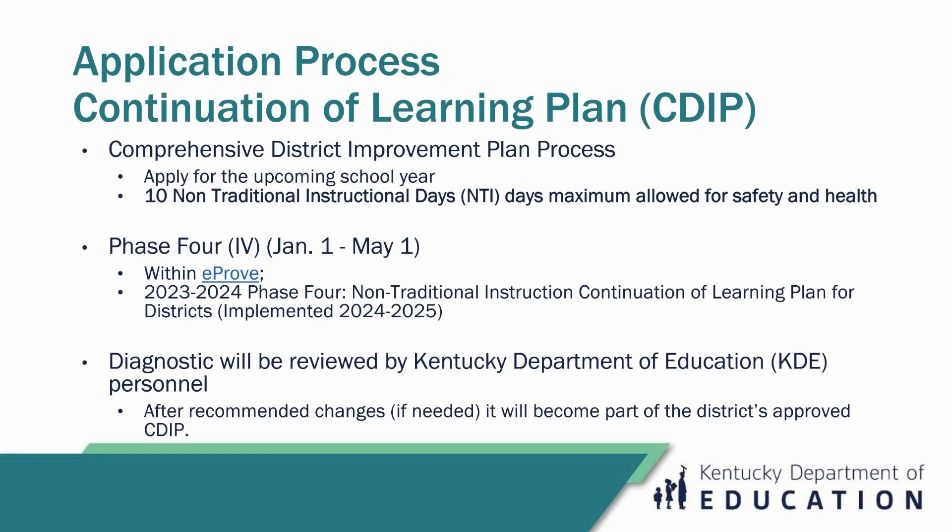When you apply and are accepted, you are granted 10 and only 10 non-traditional instruction days maximum for safety and health reasons alone. This plan when you fill it out will be part of the phase four part of CDIP. That window opens January 1st through May 1st. You may edit it before January 1st, but the official window is January 1st to May 1st.